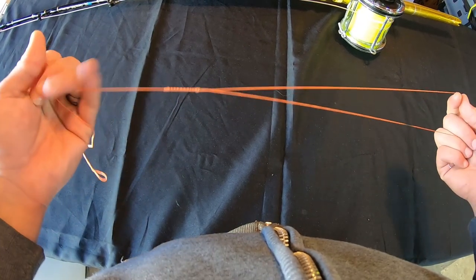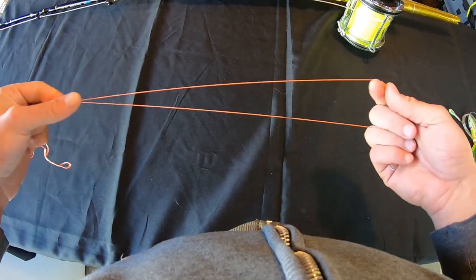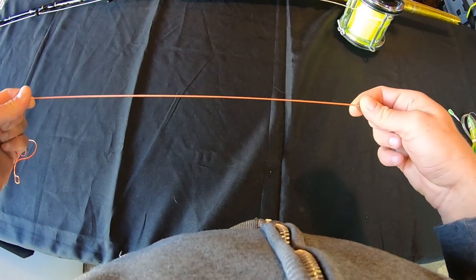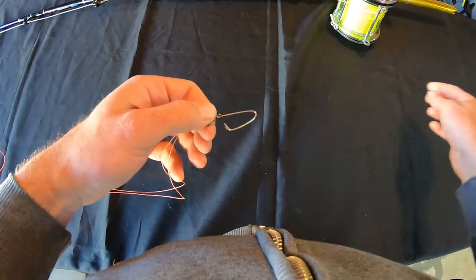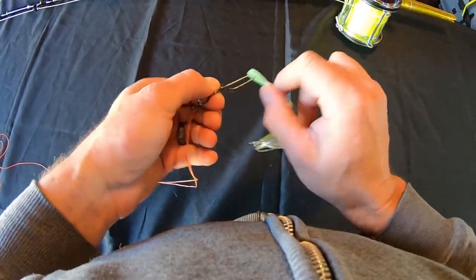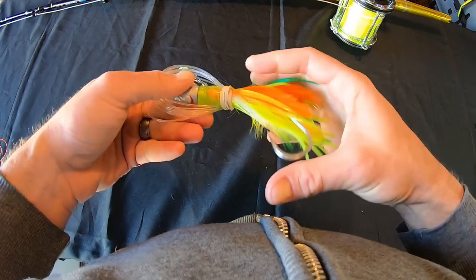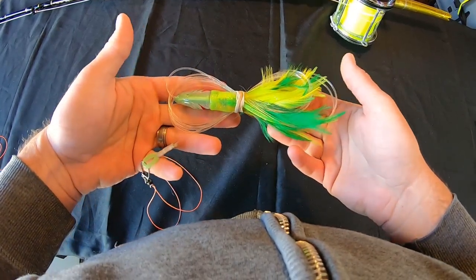The primary purpose of the Bimini twist is to create a doubled leader for extra strength or double strength, and then creating a super strong way of connecting your trolling lures. This is especially used for game fishing.